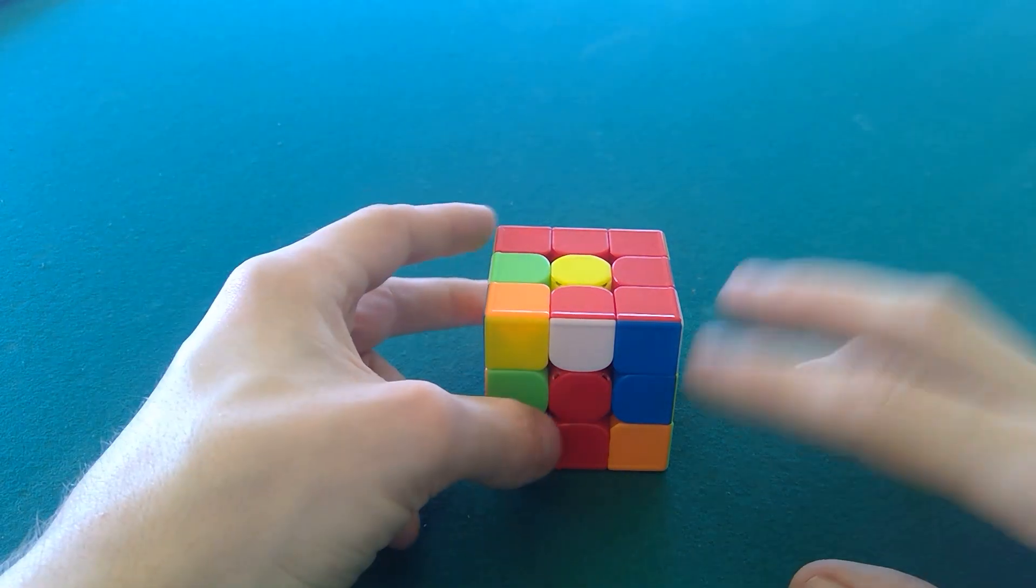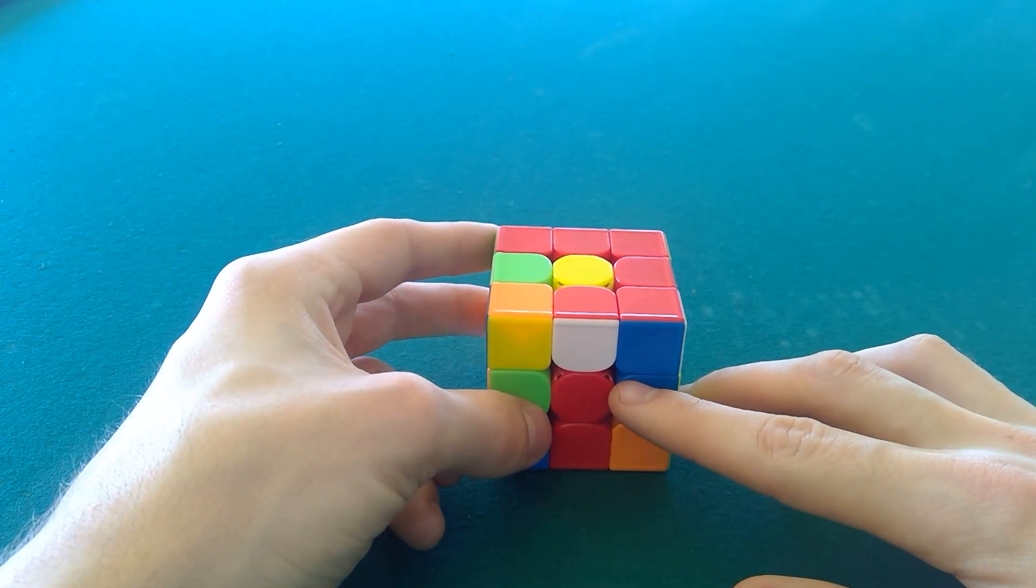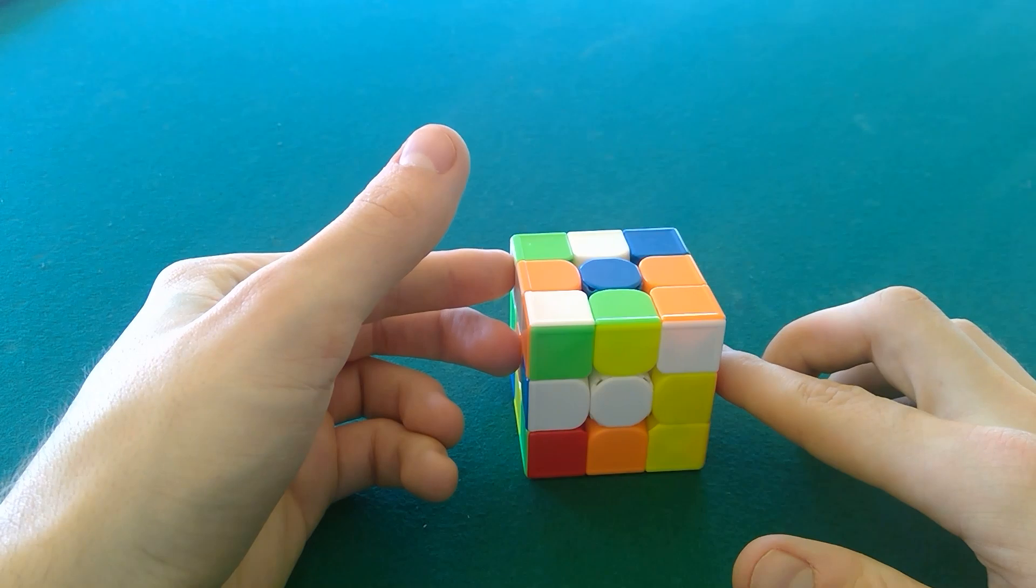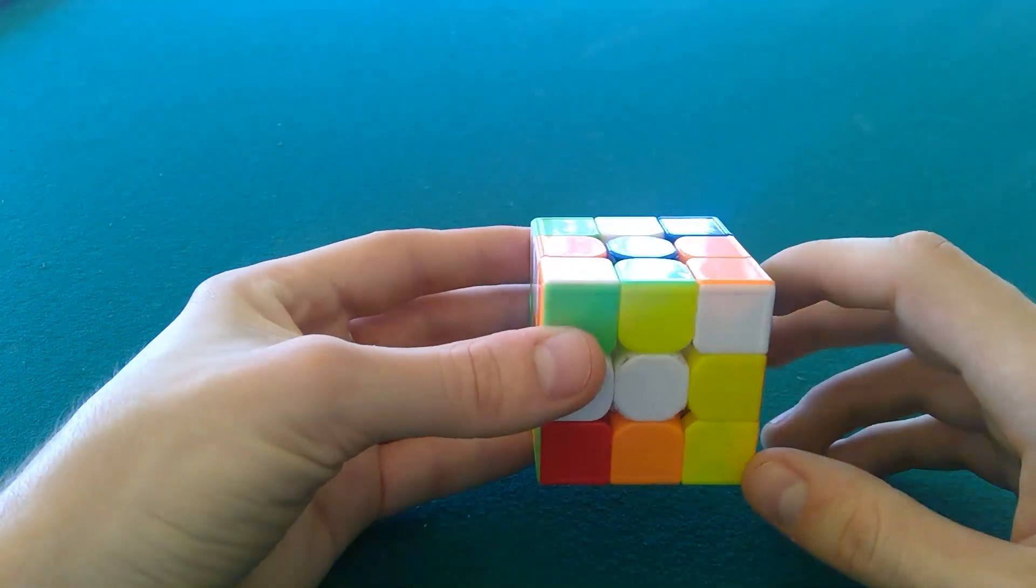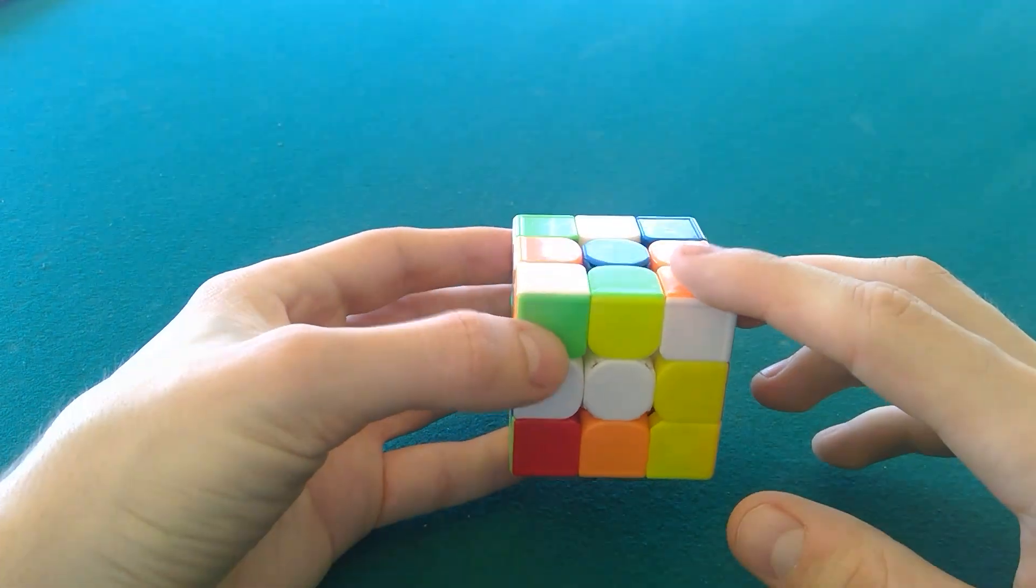We got an ugly orientation today, but we know red always goes on the right, so just like that. Alright, I didn't see anything too crazy when we were twisting, no twisted corners or anything. So let's go straight into it.